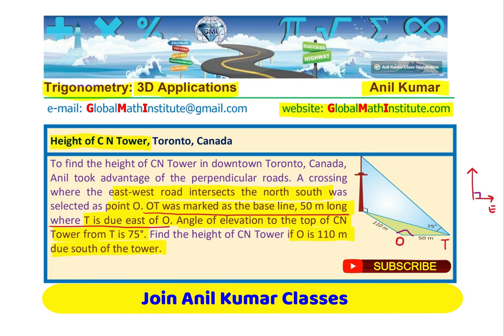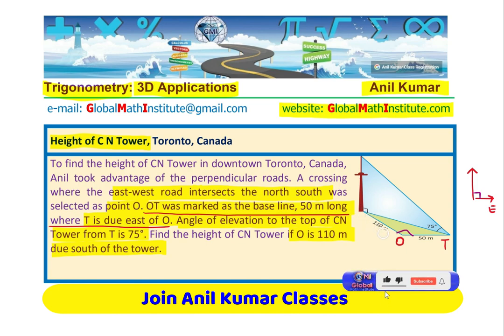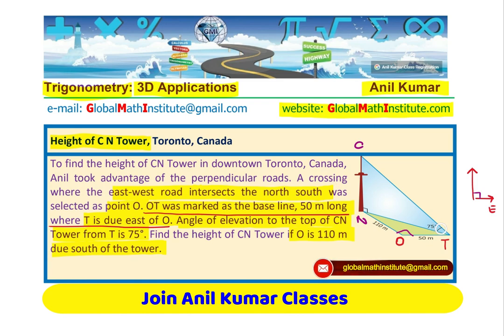O is 110 meters due south of the tower. Now let's label the CN Tower as CN. We now have a complete figure, with the angle of elevation being 75 degrees. See how simple it is.